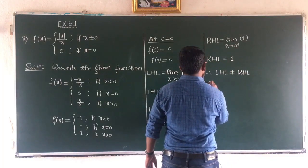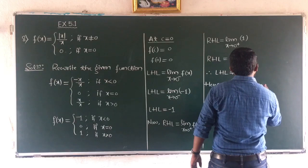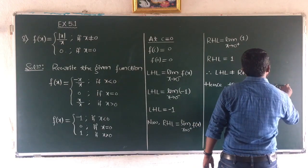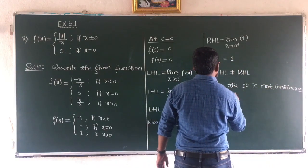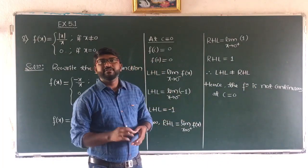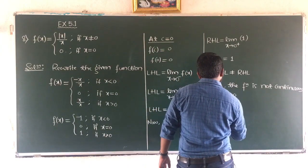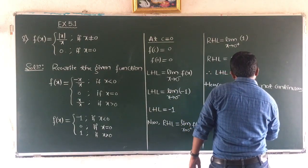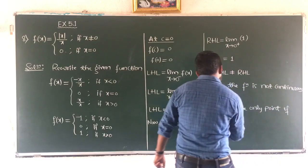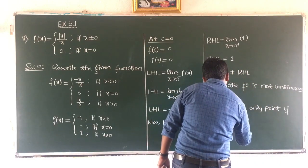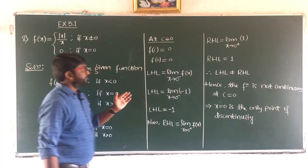The function is not continuous at c equal to 0. Therefore, x equal to 0 is the only point of discontinuity. This implies x equal to 0 is the only point of discontinuity. This is all about the 8th problem. Pause the video to note it down.